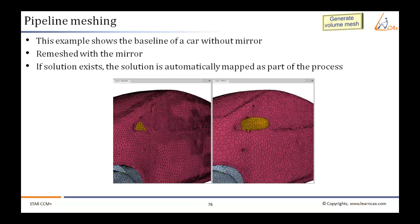This example shows the baseline of a car without mirror, which is then remeshed with a mirror. Please note, if solution exists, the solution is automatically mapped as part of the process.